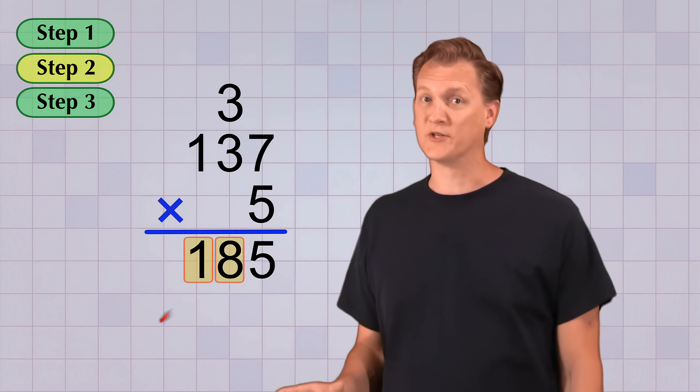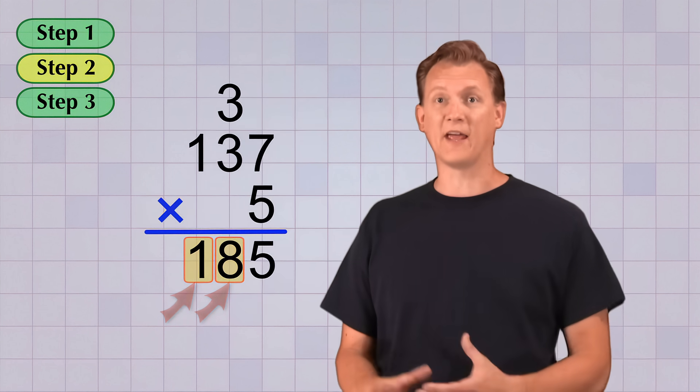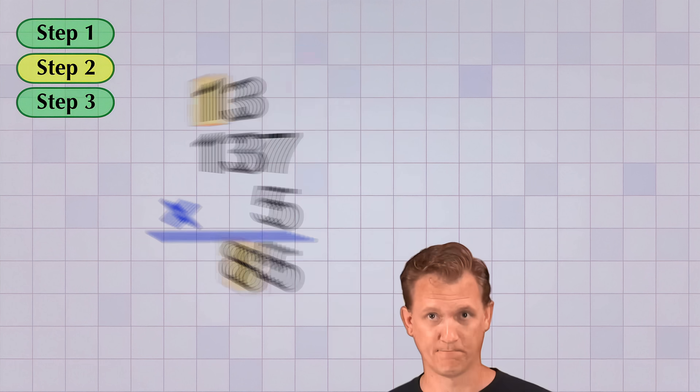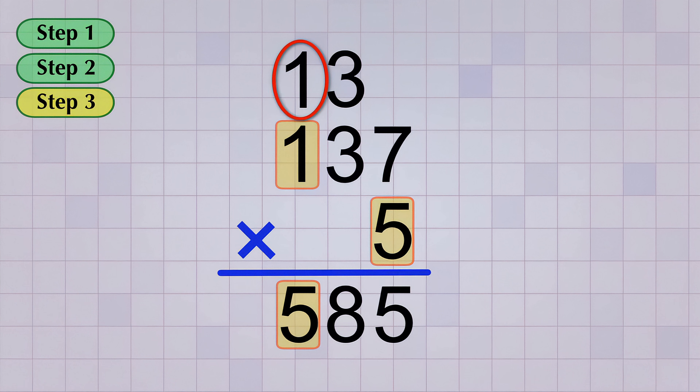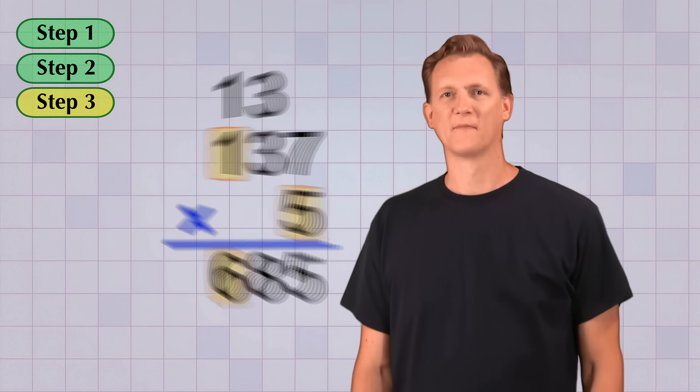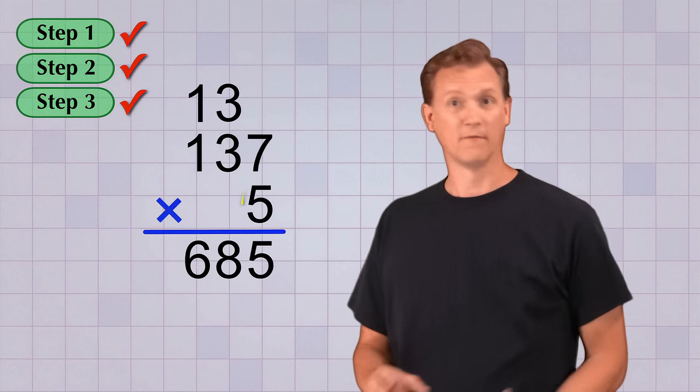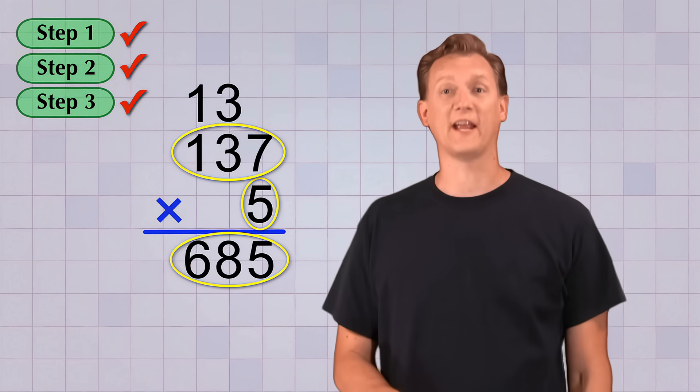Once again, our answer is a two digit number. So we leave the 8 in our answer line, and we carry the 1 up to the top of the hundreds place column. Now for our third and last multiplication step. We have 5 times 1, which is just 5. But again, there's that digit we carried up. We add it to the answer we got from the multiplication step. So 5 plus 1 gives us 6. We've done all three of our multiplication steps, and the answer to our problem 5 times 137 is 685.